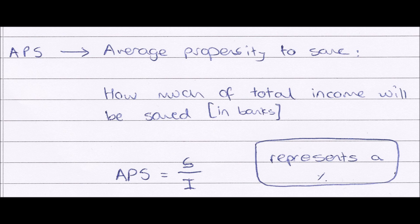Next, we move on to our APS, or our average propensity to save. This is similar to our APC, but this shows how much we save this time, as opposed to how much we spend and consume. So our APS, average propensity to save, represents how much of total income will be saved in banks, rather than spent on goods.